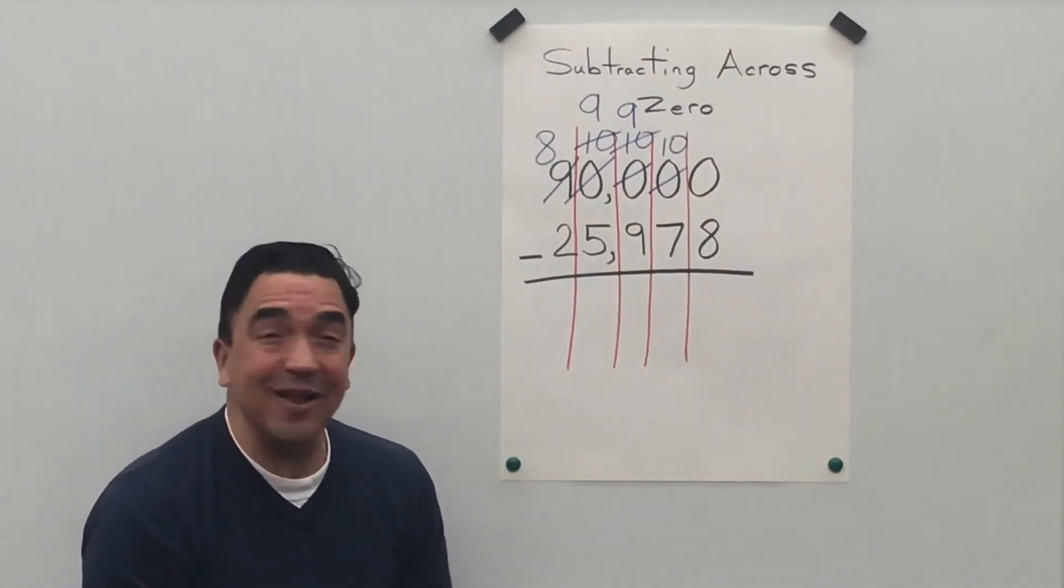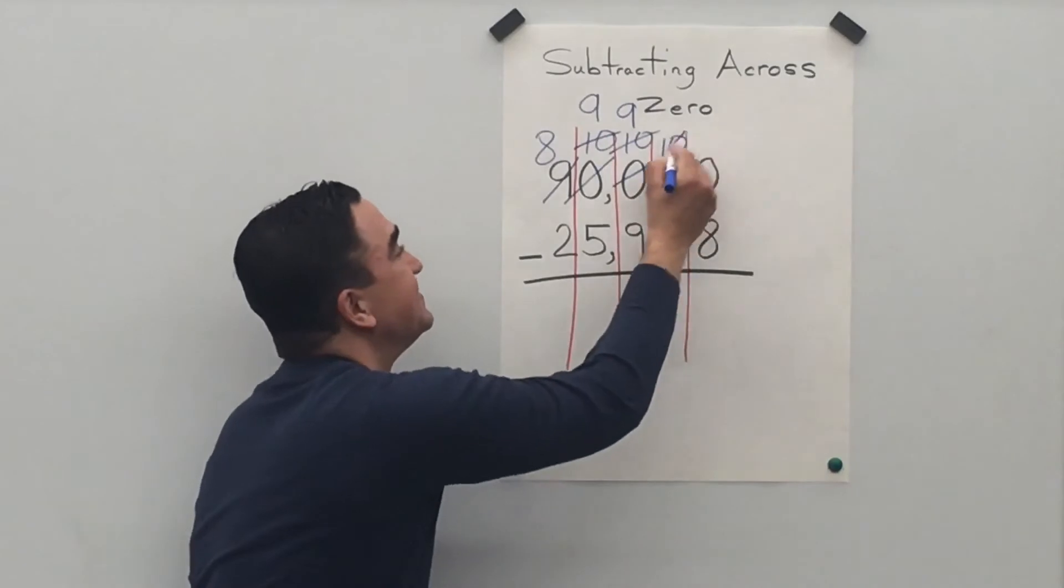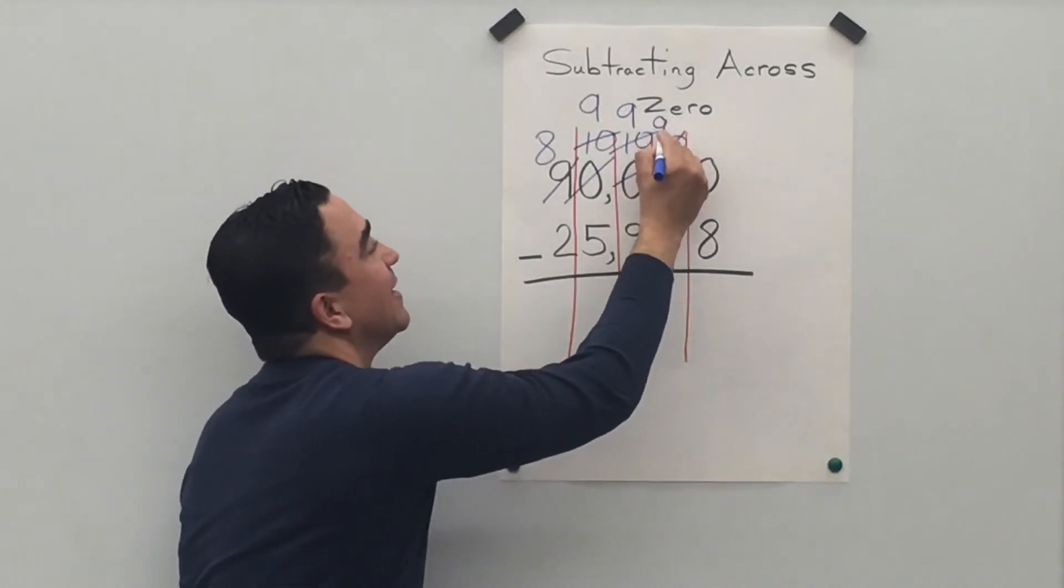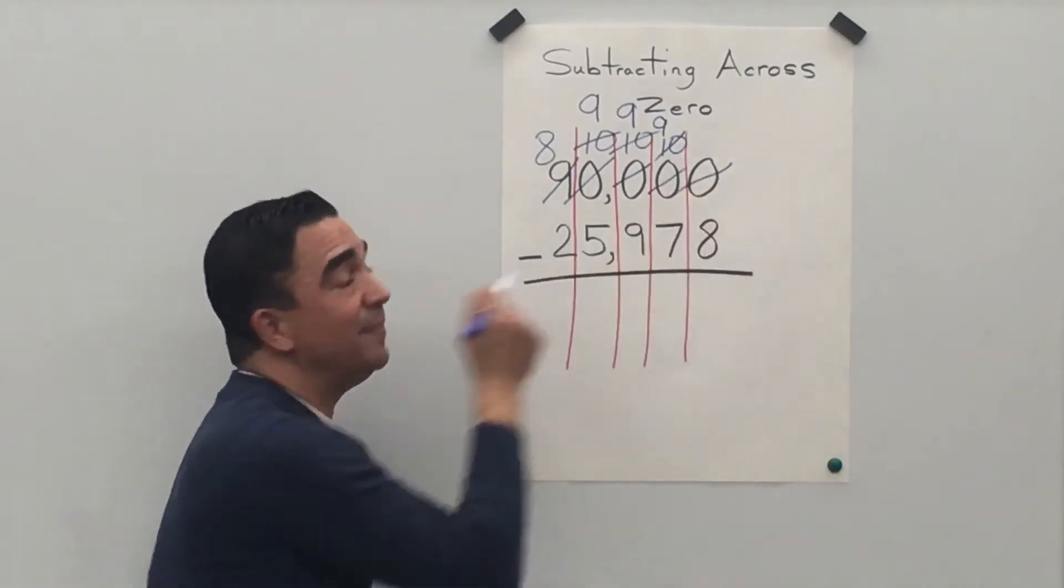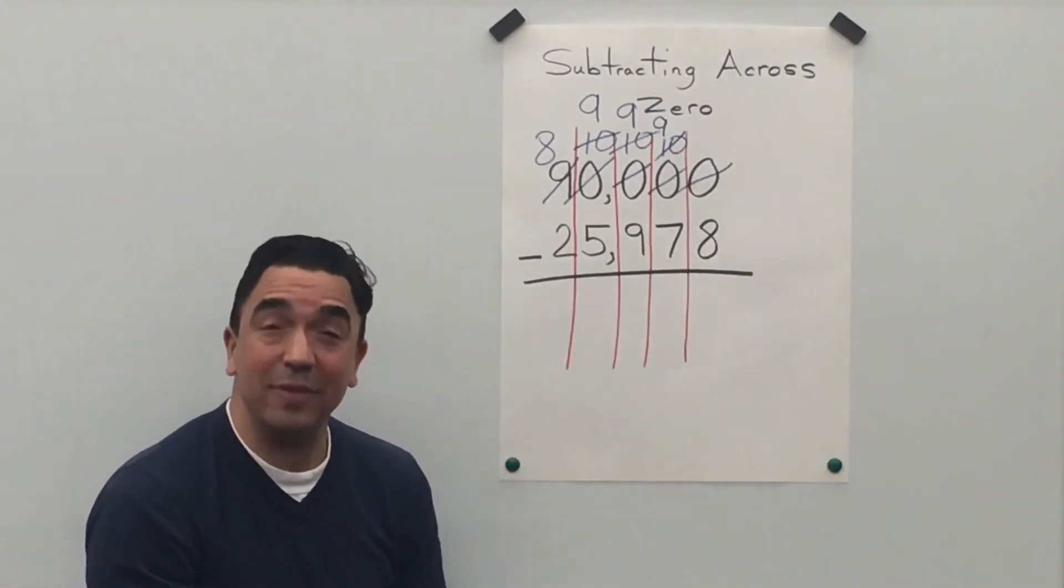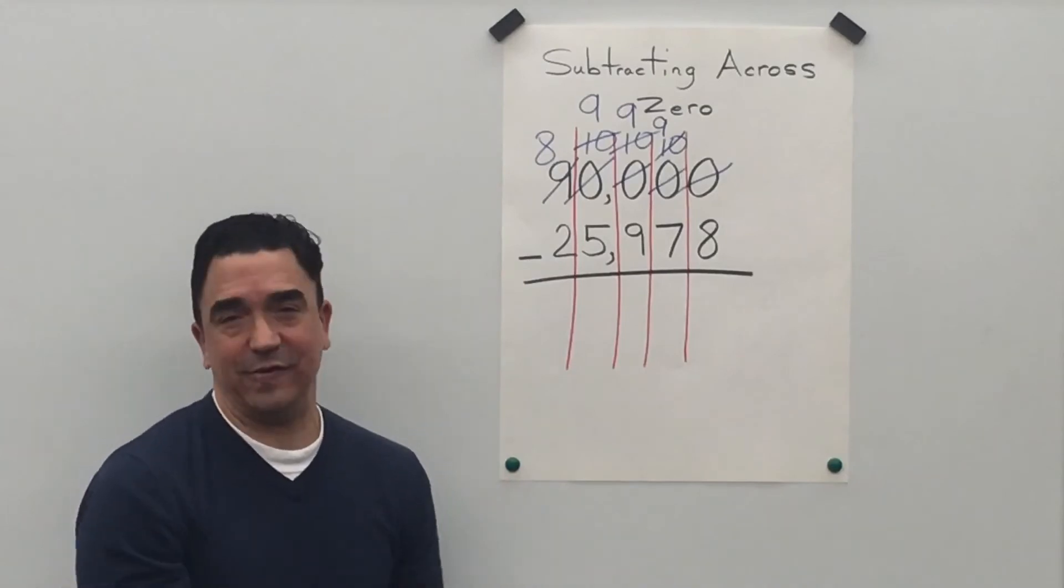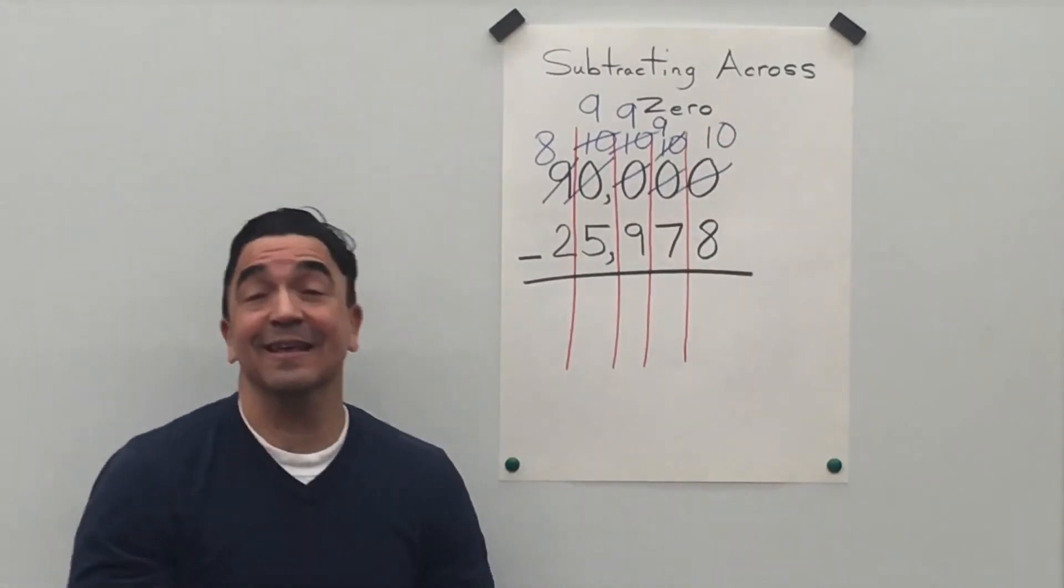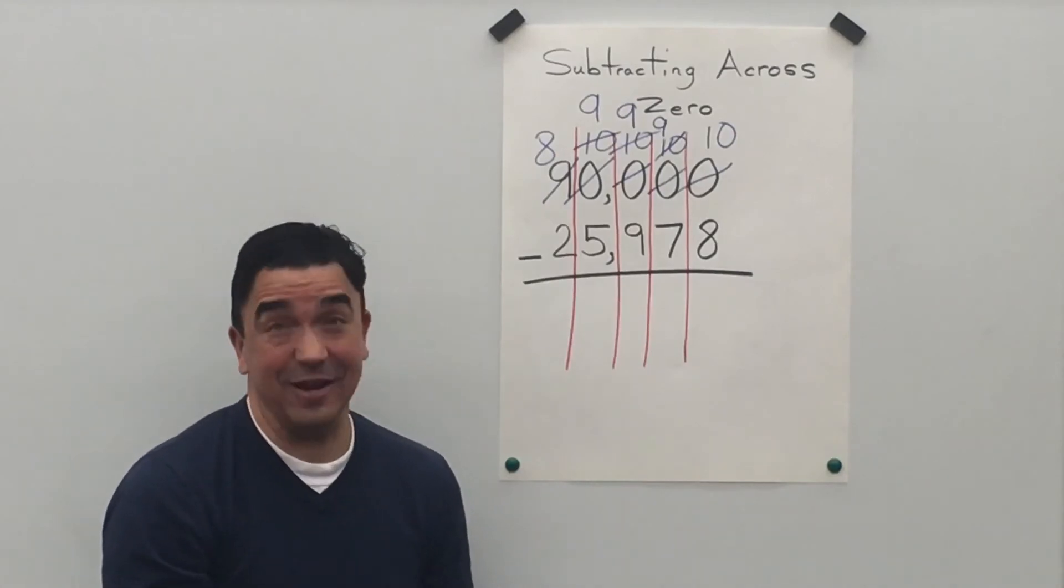Take away one from the ten. Nine left. And our zero in the ones place becomes a ten. Now, I think we're ready to subtract.